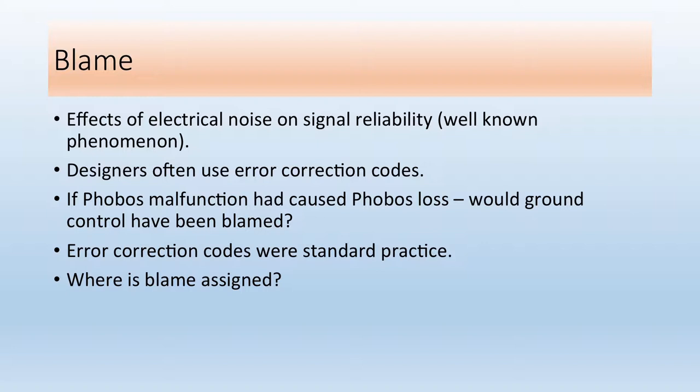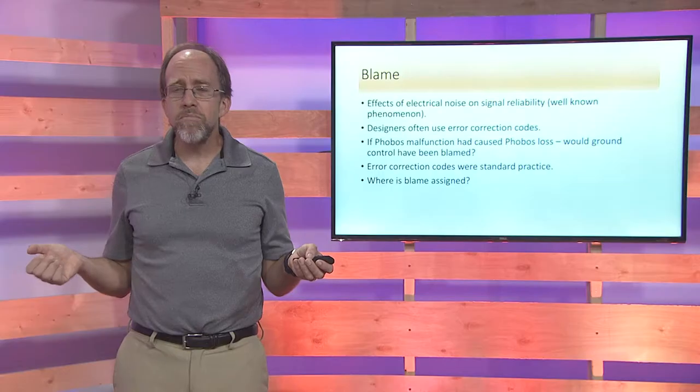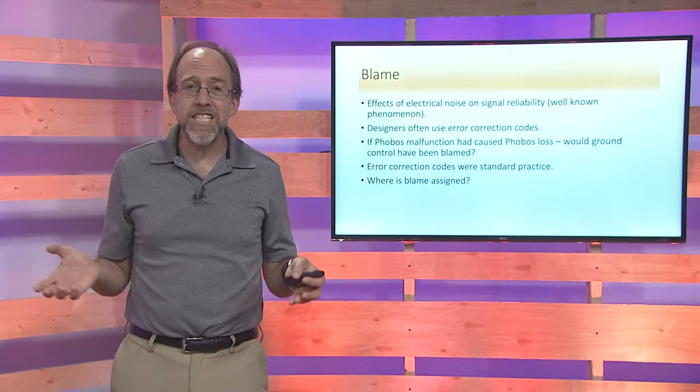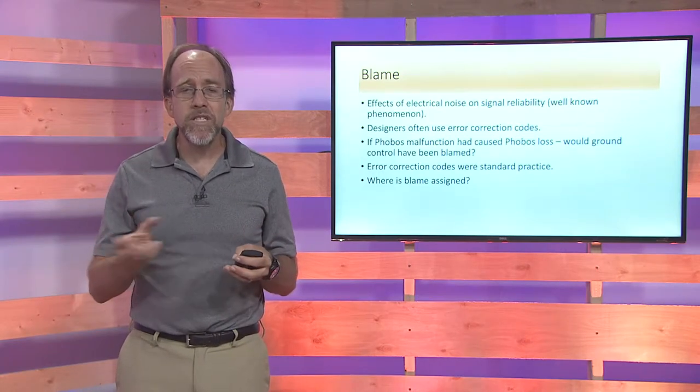First, electrical noise, signal reliability. You're sending a message from Earth to a satellite that's orbiting Mars, and electrical noise oftentimes can cause the actual coding to have changed. Designers use things called error correction codes to be able to correct for this. Now, in the case of the Phobos satellite, the signal itself was sent up to Mars, but it actually caused the satellite to go into an existing mode that caused the entire thing to malfunction. The question here is, was it a design error or was it an operational error? Error codes were standard practice. Sending things to Mars that way is standard practice. But who is at fault here?